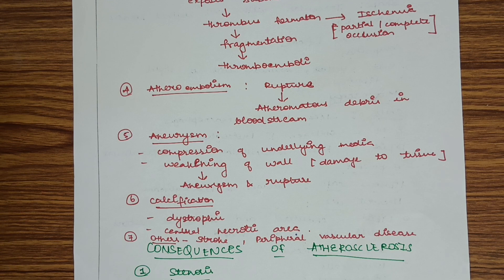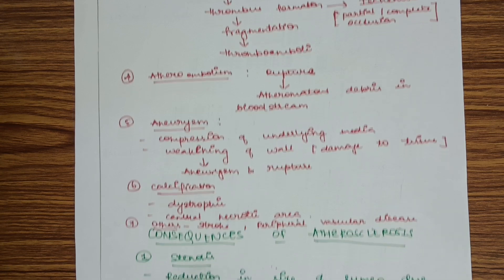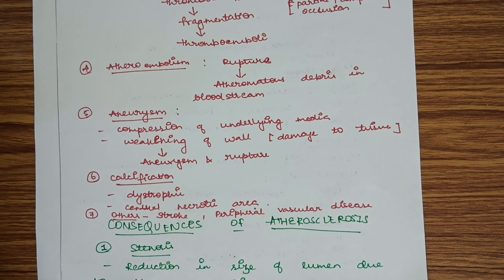Atheroembolism can occur when plaque rupture releases atheromatous debris into the bloodstream. Aneurysm can develop because plaque formation in the tunica intima compresses the underlying tunica media, weakening the vessel wall, which can also rupture. Calcification is another complication — generally dystrophic and seen mainly in the central necrotic area. Other complications include stroke and peripheral vascular disease due to thromboemboli.